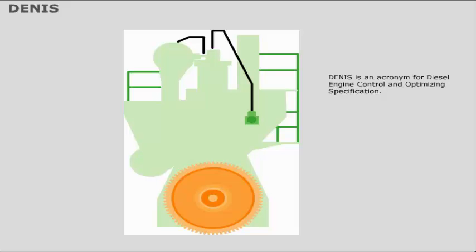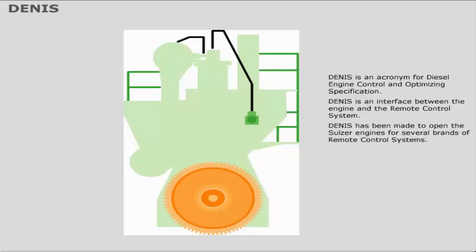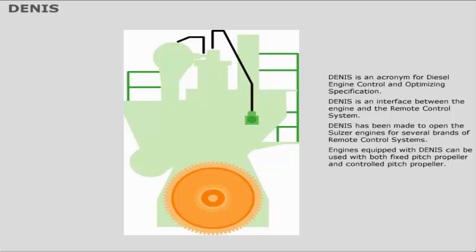DENNIS is an interface between the engine and the remote control system. DENNIS has been made to open the Seltzer engines for several brands of remote control systems. Engines equipped with DENNIS can be used with both fixed-pitch propeller and controlled-pitch propeller.